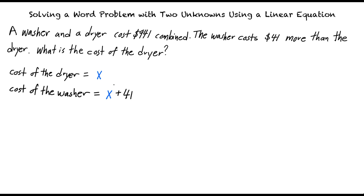The combined cost of both the washer and the dryer is equal to $941. Because the cost of the dryer is x and the cost of the washer is x plus 41, we know that x plus x plus 41 will be equal to $941. This is equivalent to 2x plus 41 equals $941.